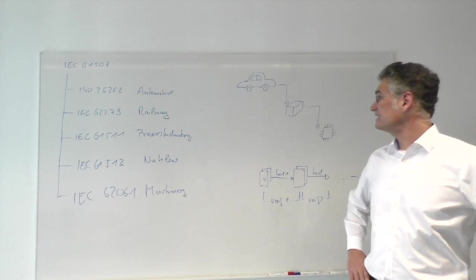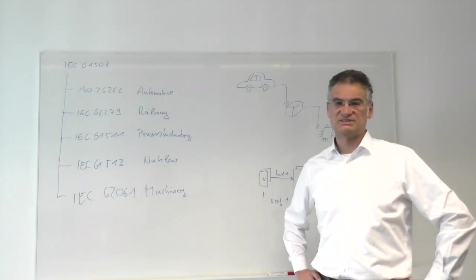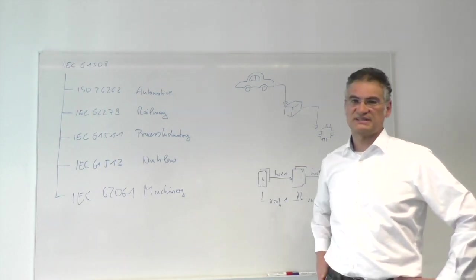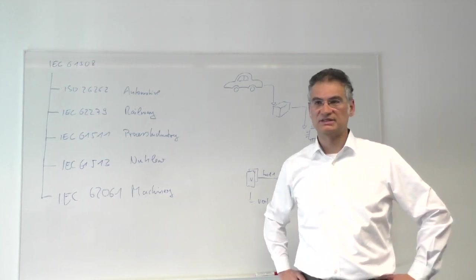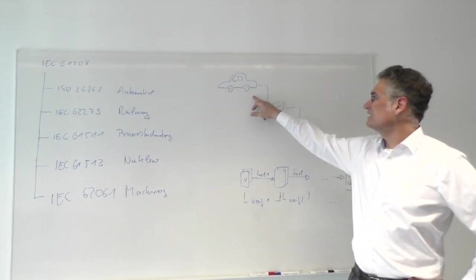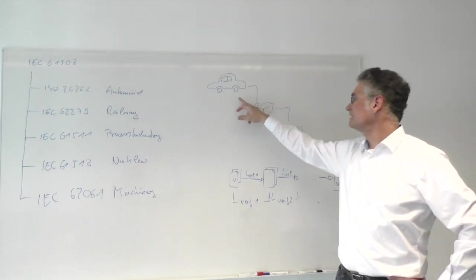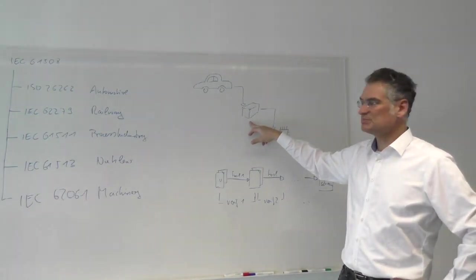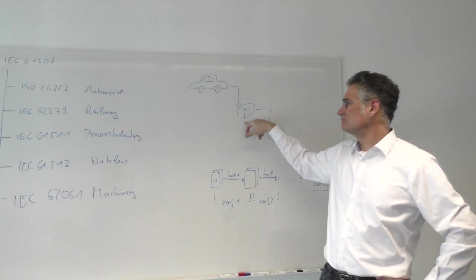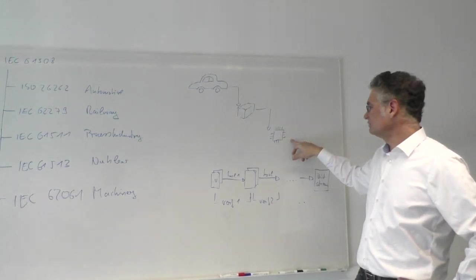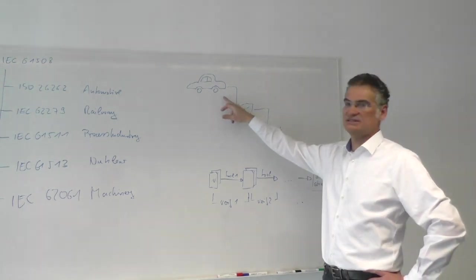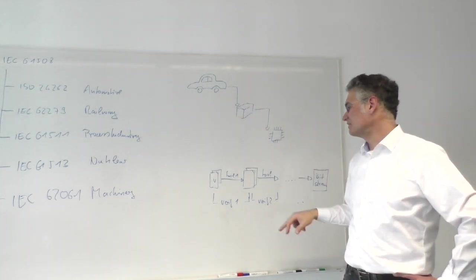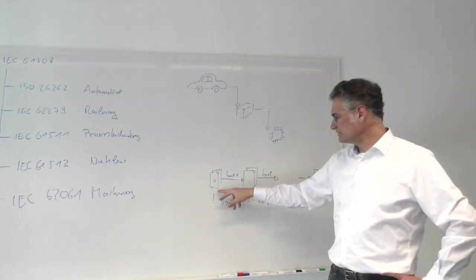So why don't you give us an example? Yeah. So let's take the most commonly used standard, which is the automotive standard, as there's many more cars than nuclear power plants in the world. So let's say you have a car here and a car manufacturer of this car, and there's some OEM supplier supplying some box which is built into the car, and you are the producer of this integrated circuit here that is built into the box that eventually ends up in the car.